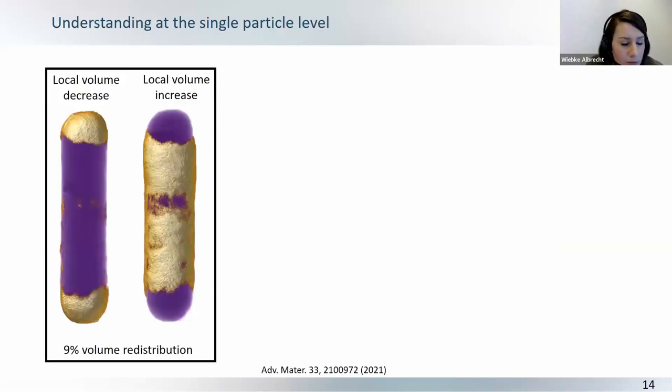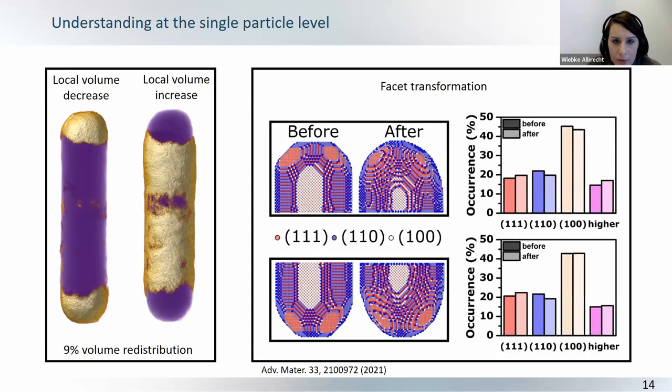And for the specific nanoparticle that I showed you, we saw that 9% of the volume was redistributed, and not surprisingly, atoms from the tips diffused to the sides. So, from higher curvature to lower curvature, and what we could also now see is what happened to the surface facets, and the more stable 111 facets increased at the expense of less stable 110 and 100 facets.